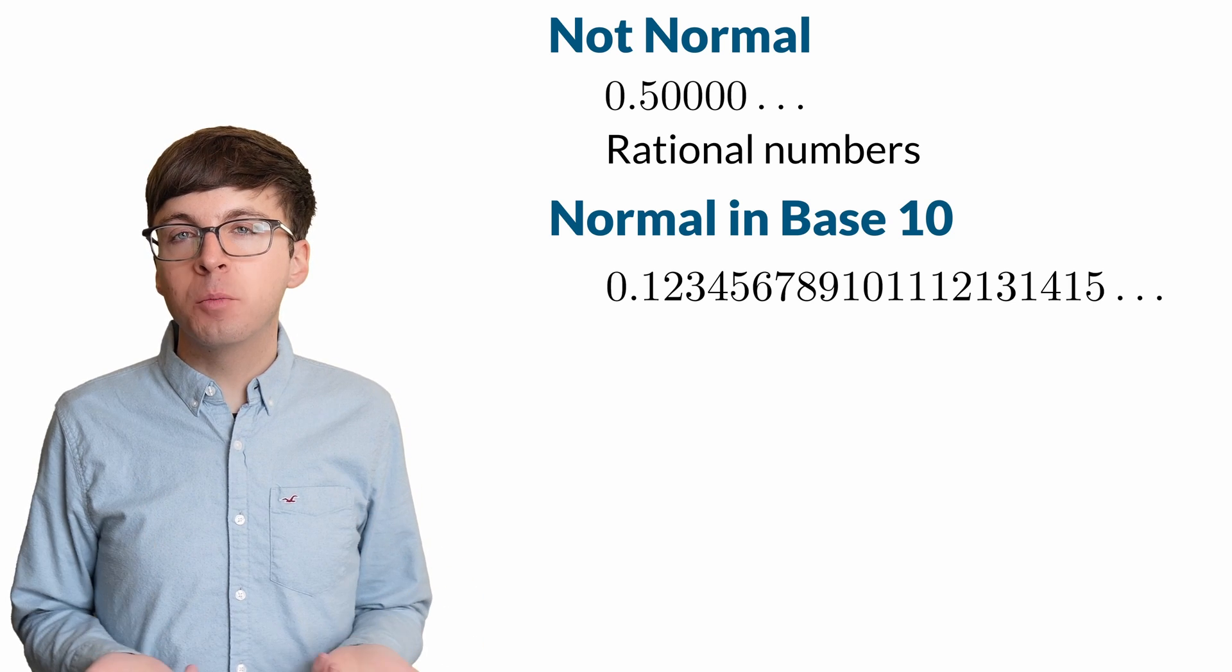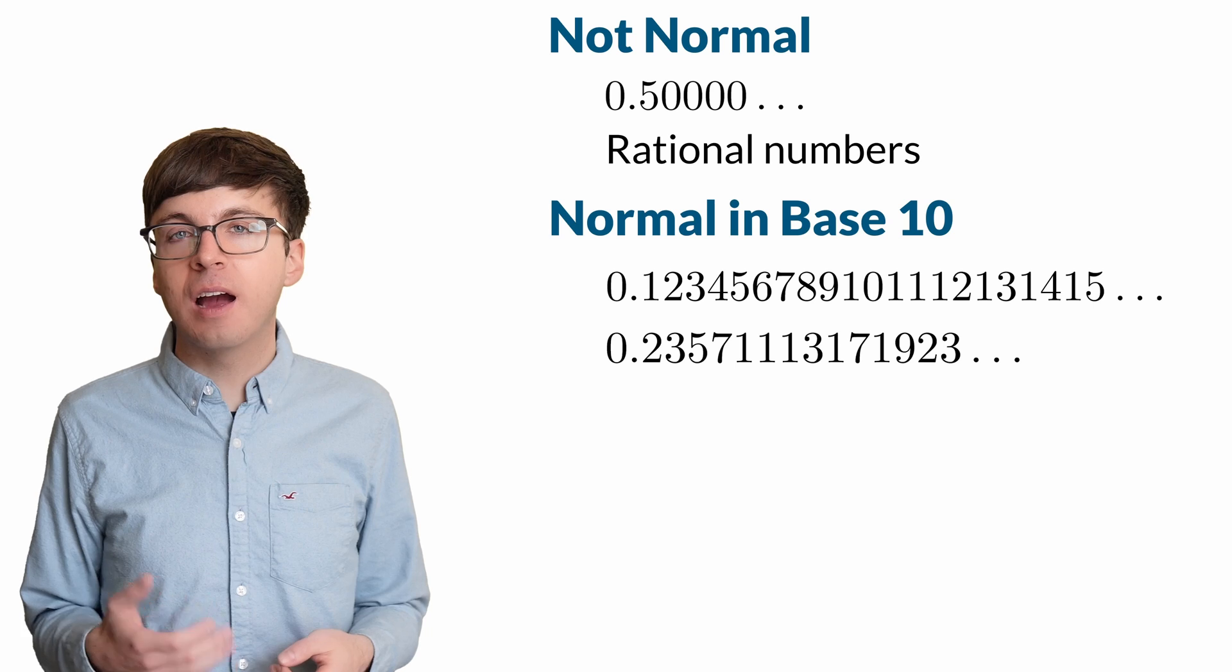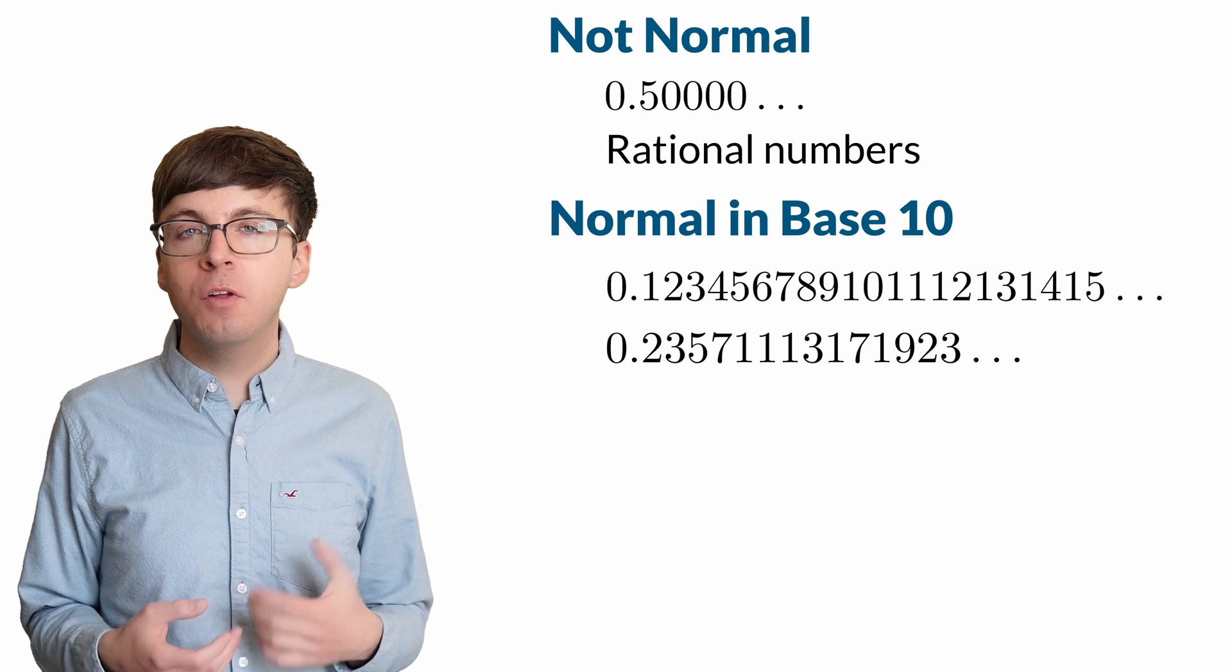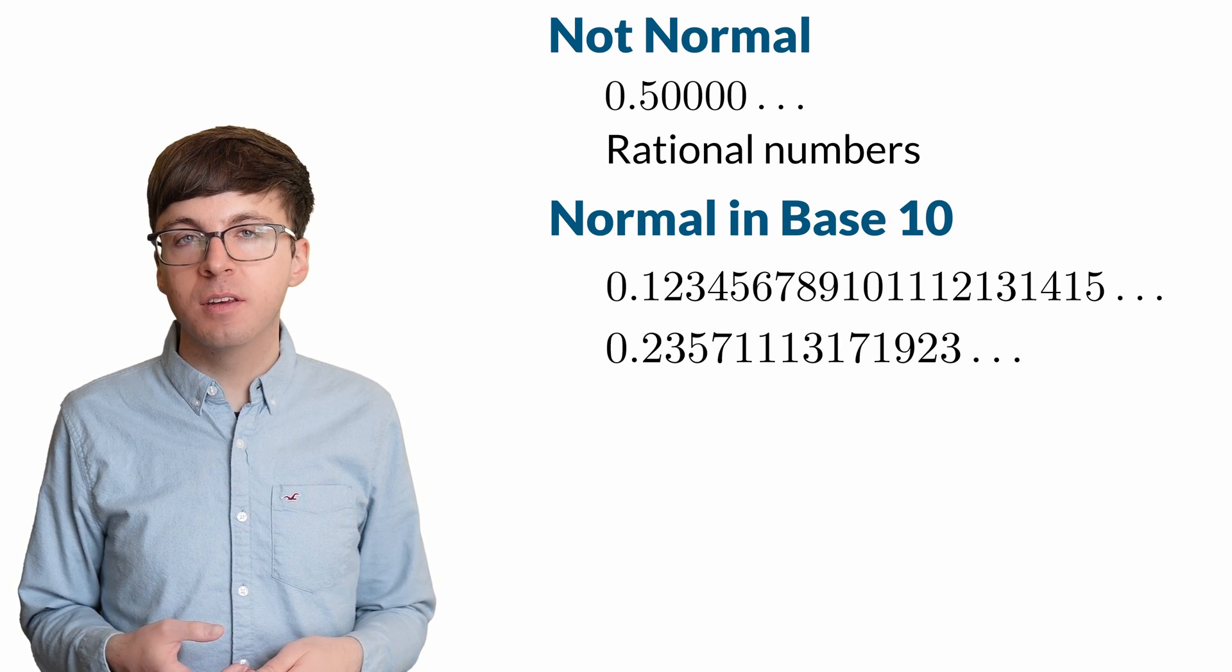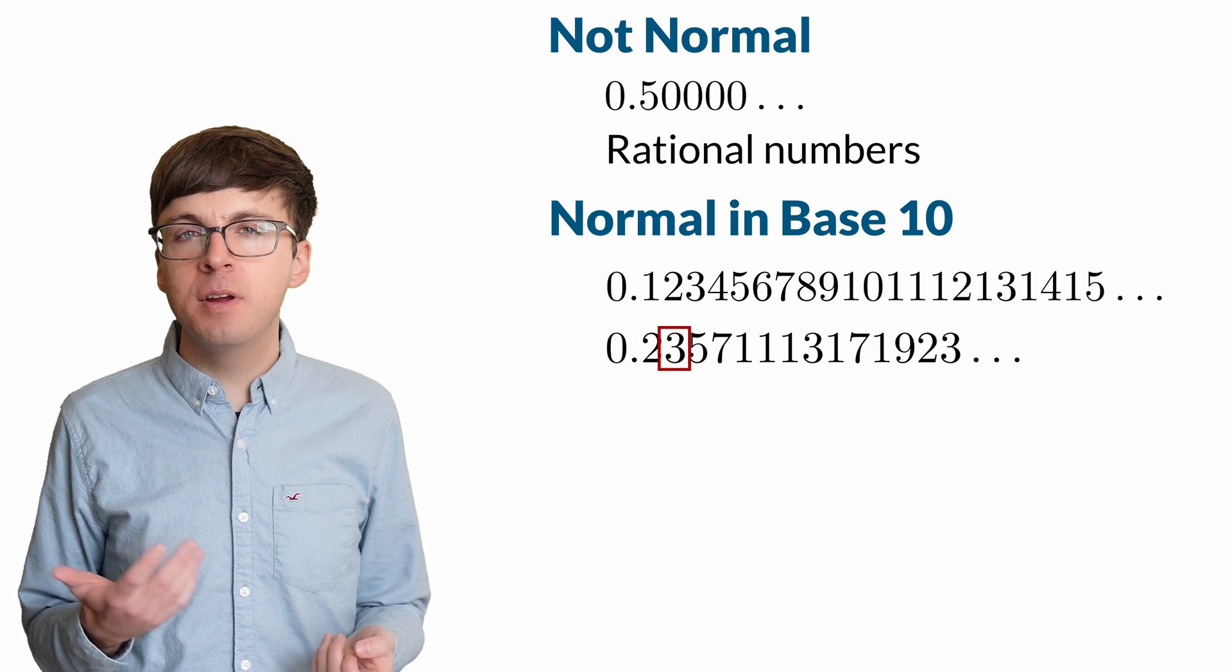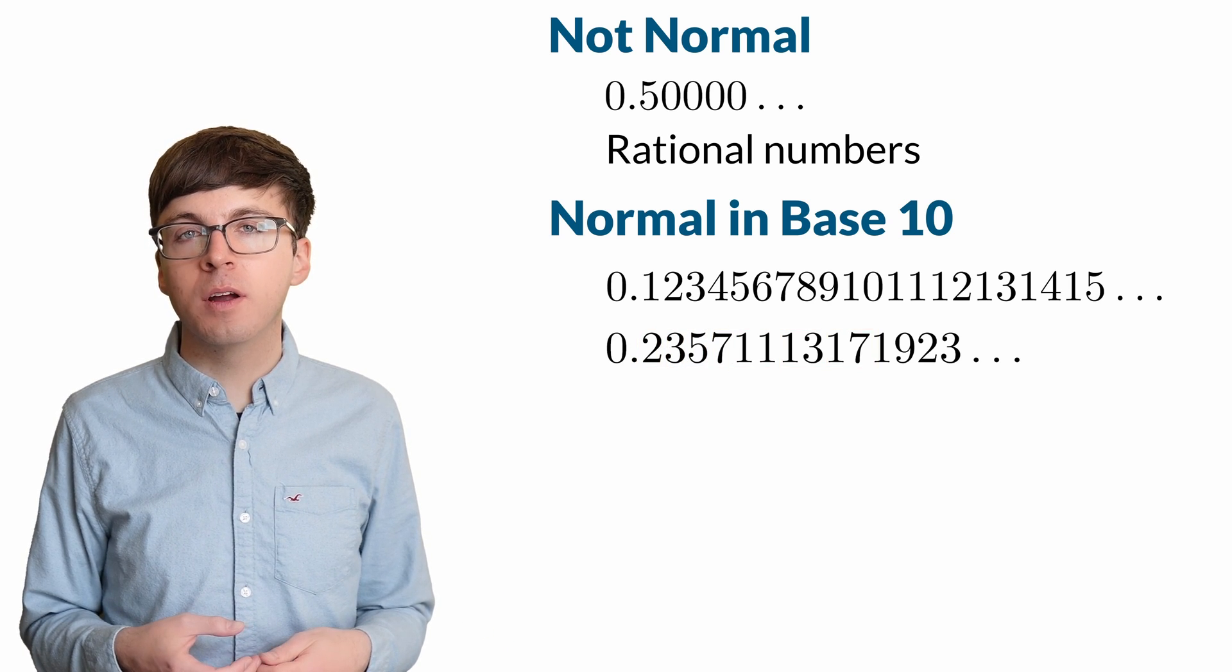We can create a similar number by listing all the prime numbers in order after the decimal point. This is called the Copeland-Erdős constant. It goes 0.2, 3, 5, 7, 11, 13, and so on. This number is also normal in base 10.